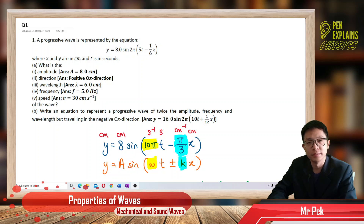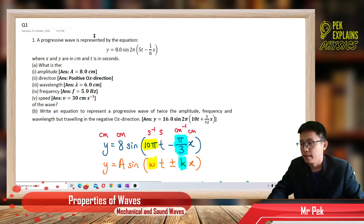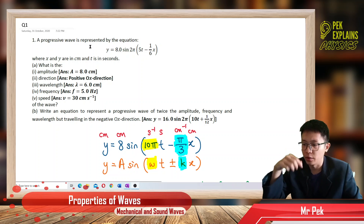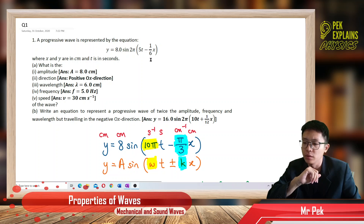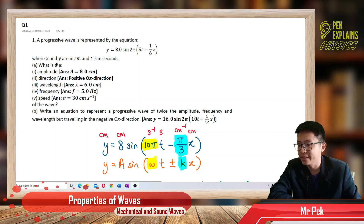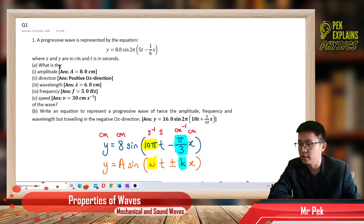Hi, welcome back. Now let us discuss some questions in properties of waves. This is the first question. A progressive wave is represented by the equation y equal to 8 sine 2 pi times (5t minus 1 over 6 x), where x and y are in cm and t is in seconds. We need to find the amplitude, direction, wavelength, frequency, and speed of the wave.